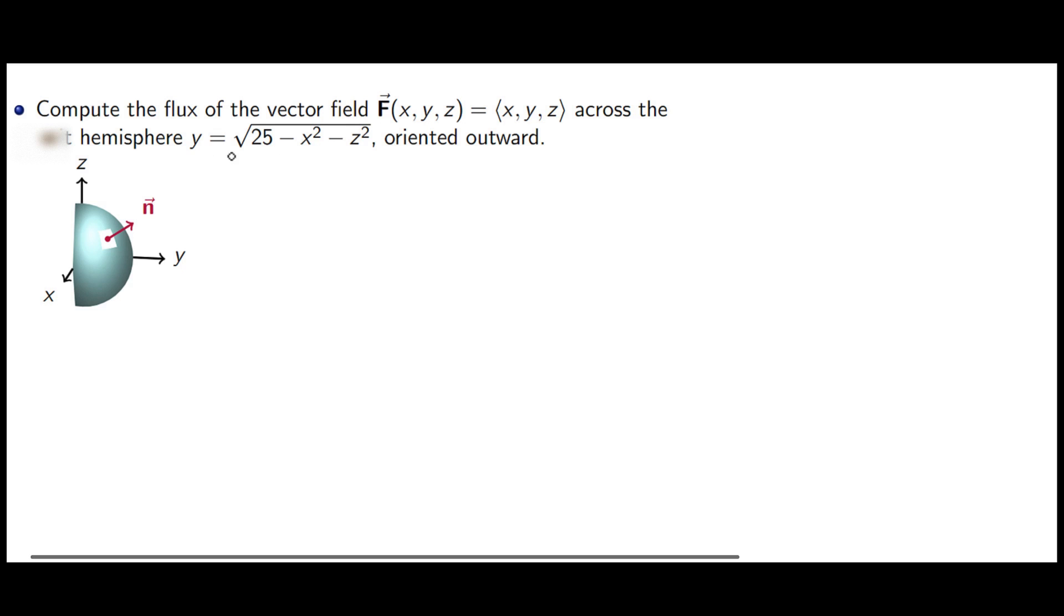So let's first figure out what this sphere or hemisphere looks like. If I go to power 2, then this is going to be that. If I take the x squared and z squared to the other side, I get a sphere of radius 5, and I have to remember y is bigger than or equal to 0 to make it a hemisphere.